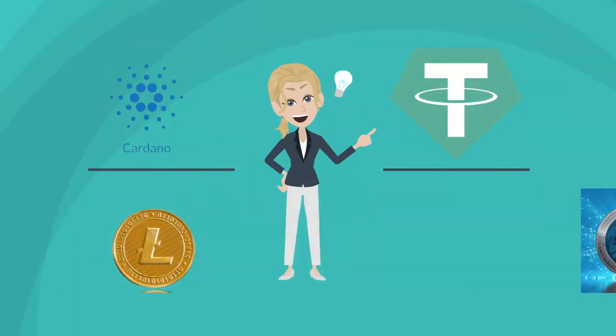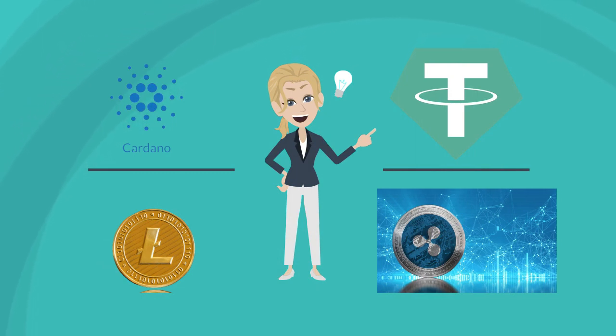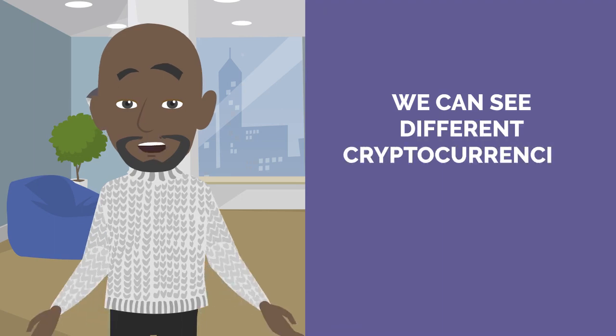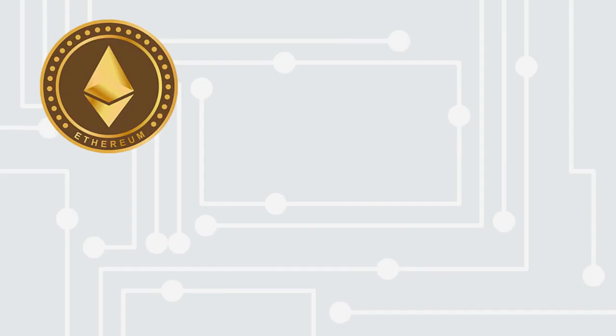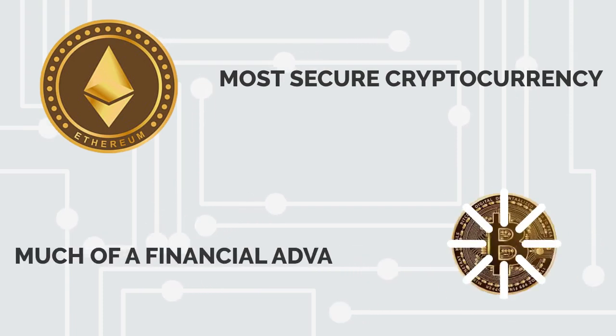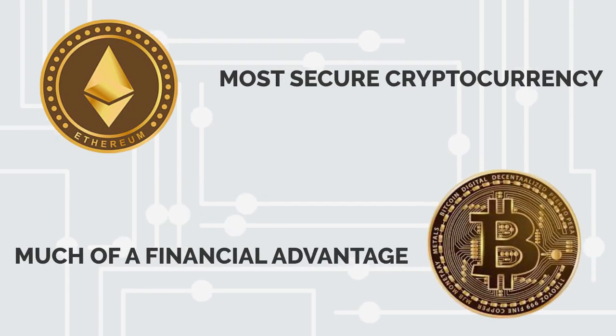The others have their own unique advantages and will still most likely be adopted, but for more niche circumstances. We can see different cryptocurrencies have different edges over others. Where Ethereum is the most secure cryptocurrency, it doesn't have that much of a financial advantage over Bitcoin. But overall, it gives a good competition to Bitcoin.